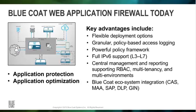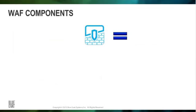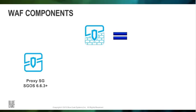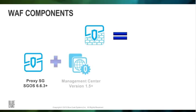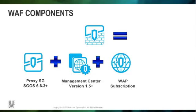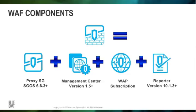Integration with the full Bluecoat ecosystem includes the content analysis system, the malware analysis appliance, the security analytics platform, data loss prevention, and the global intelligence network. To take advantage of the full capabilities of the Bluecoat WAF solution, the following components are deployed: the Bluecoat ProxySG appliance running SGOS 6.6.3 or later, Bluecoat Management Center version 1.5 or later, a subscription to Bluecoat's web application protections providing threat signature intelligence and GeoIP intelligence driven by the global intelligence network, and Bluecoat Reporter version 10.1.3 or later.